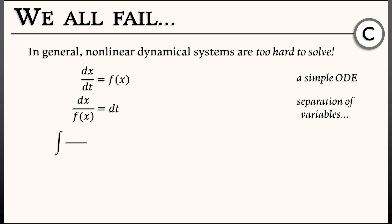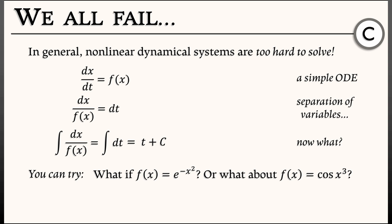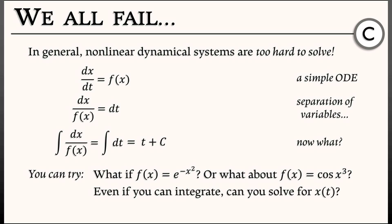We've separated the variables. Now we integrate both sides. The integral of dt is t plus a constant. But can you integrate dx over f(x)? Well, what is f(x)? It could be anything — what if it's e to the minus x squared, or cosine of x cubed? You're not going to be able to integrate that. And even if you can integrate it, can you solve the resulting expression for x as a function of t? Probably not.